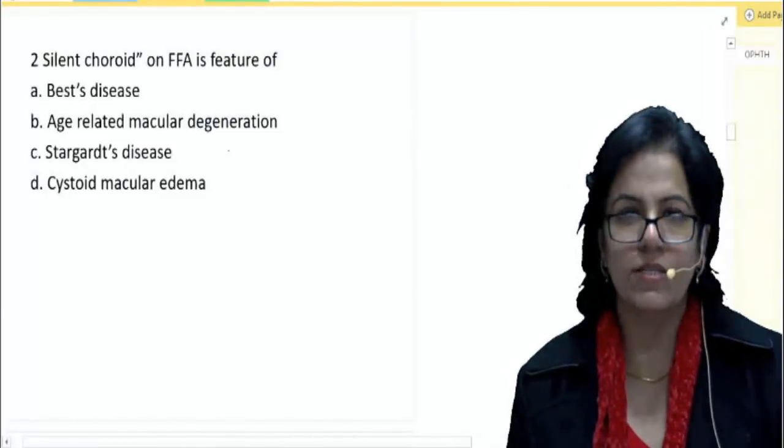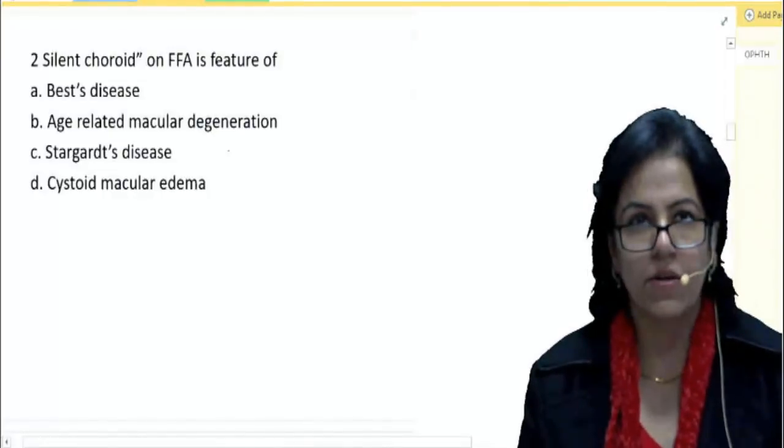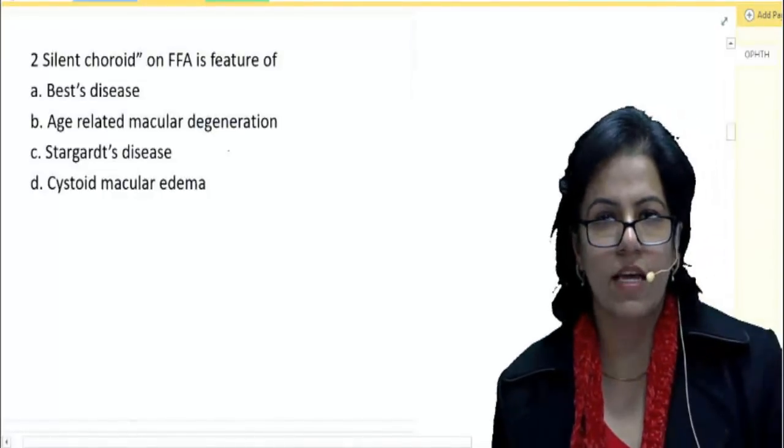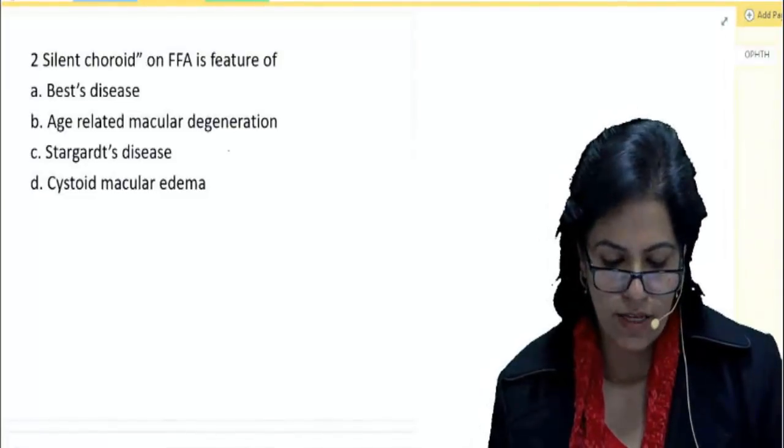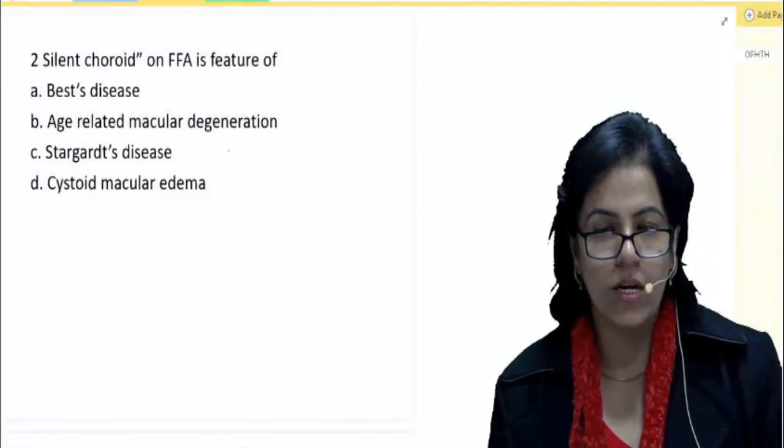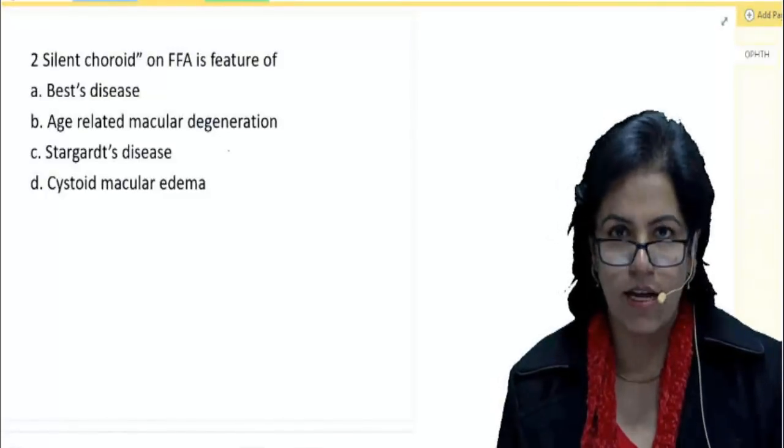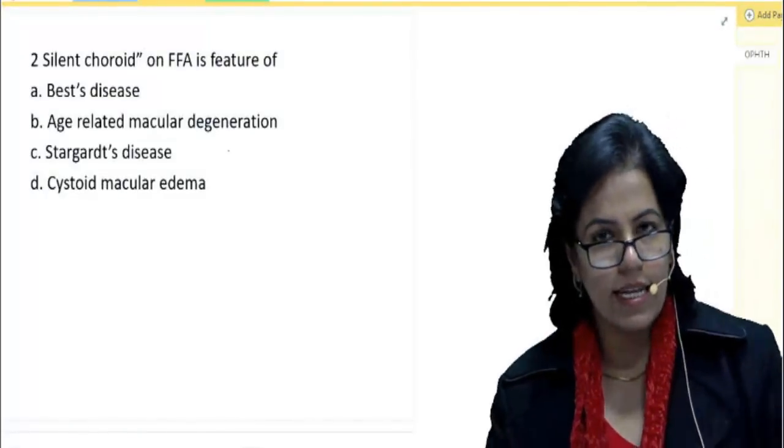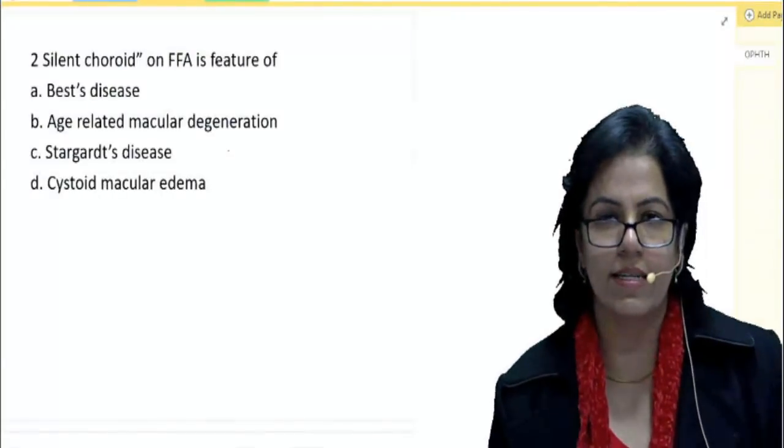What is silent choroid? Silent choroid on FFA—I hope you all know is fluorescein angiography—is a finding which means that the choroidal fluorescence is totally not seen. It is dark background and against that dark background, we are able to see prominent retinal blood vessels.